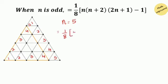Let's substitute the value of n as 5: 1 over 8, 5 times (5 plus 2) times (2 times 5 plus 1), close the parenthesis, minus 1 at the last.